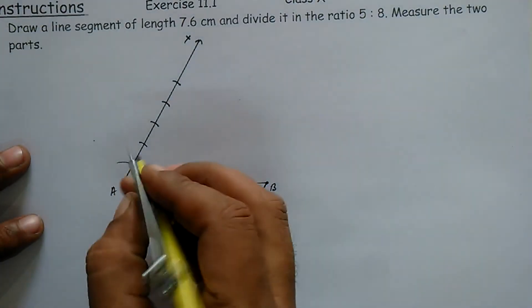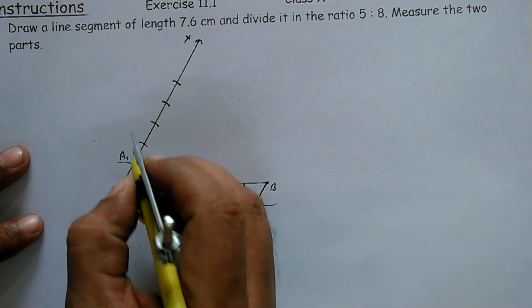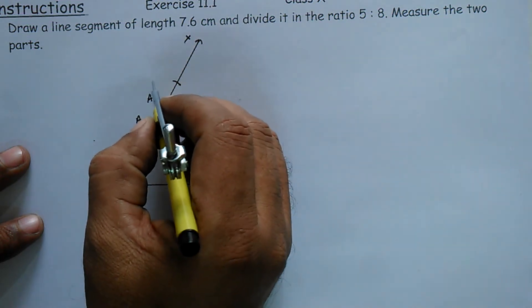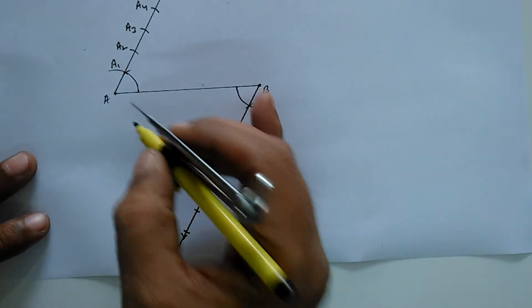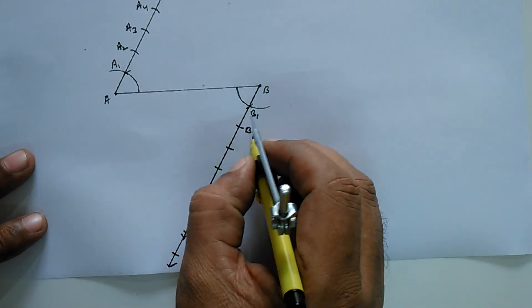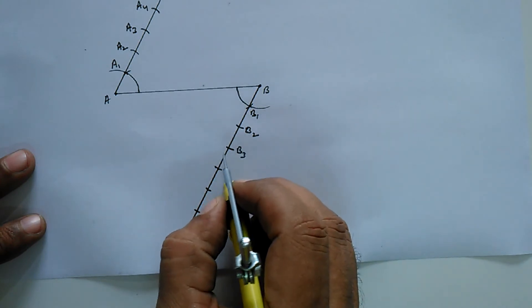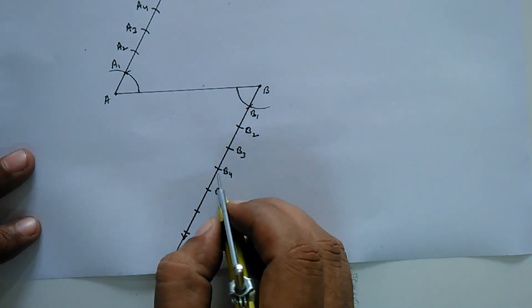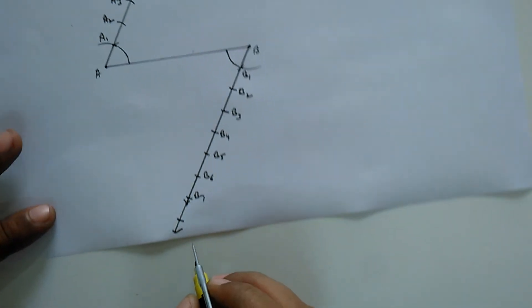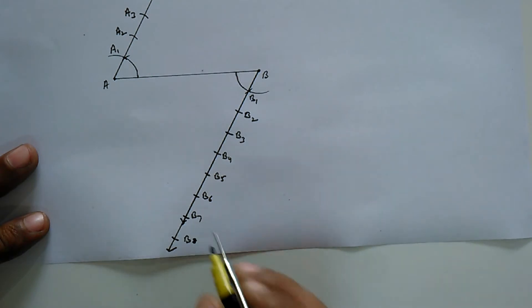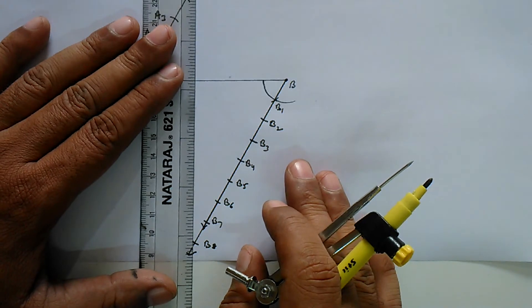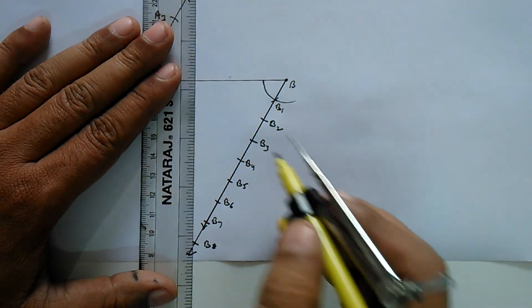Name these points as A1, A2, A3, A4, A5, and the points on the B side as B1, B2, B3, B4, B5, B6, B7, and B8. Join A5 and B8.